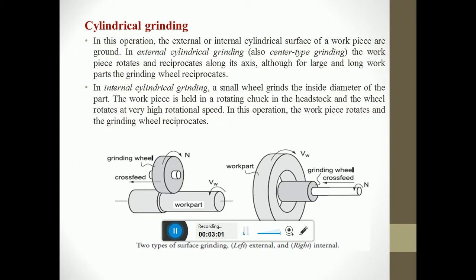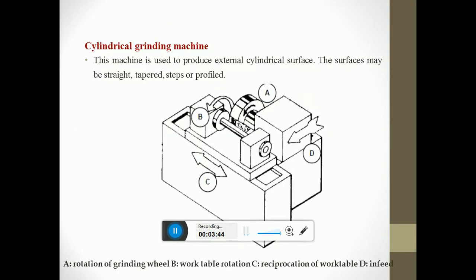In cylindrical grinding, the external or internal cylindrical surface of a work piece is ground. In external grinding, also called center type grinding, the work piece rotates and reciprocates along its axis, although for large and long work parts, the grinding wheel will reciprocate. In internal grinding, a small wheel grinds the inside diameter of the part. The work piece is held in a rotating chuck in the headstock and the wheel rotates at very high rotational speed. The work piece rotates and the grinding wheel reciprocates. In diagram 1, the grinding wheel rotates and a cylindrical workpiece is ground. In diagram 2, the work part rotates and the grind wheel is fed in a cross-feed direction. A denotes the rotation of the grinding wheel, B denotes the work table rotation, C denotes the reciprocation of the work table, and D denotes the infeed.